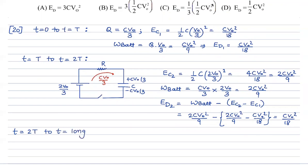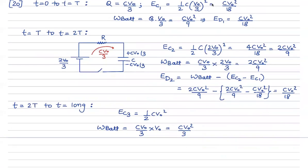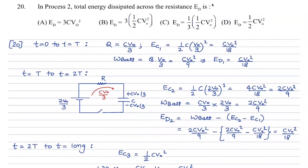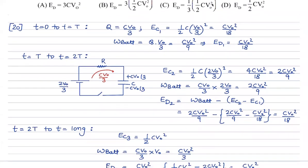In the third step, energy stored in the capacitor finally becomes half CV_not squared. The battery delivers further charge CV_not/3, and work done by the battery equals CV_not squared by 9. The energy dissipated in the third step is: (1/3 minus 1/2 plus 2/9) times CV_not squared, which also equals CV_not squared by 18. So each step gives energy dissipation of CV_not squared by 18.